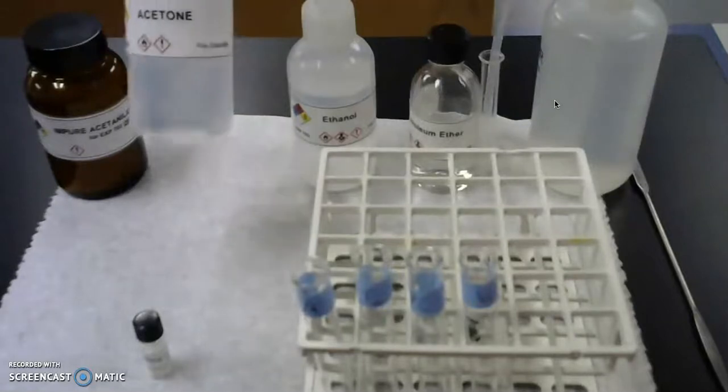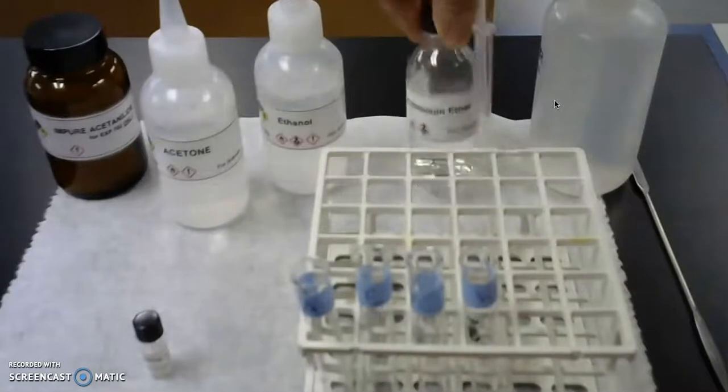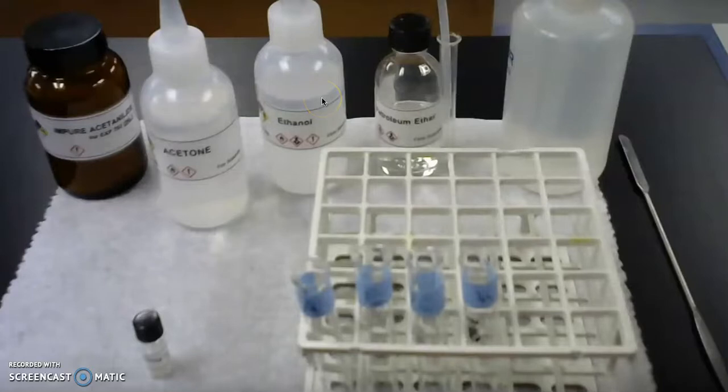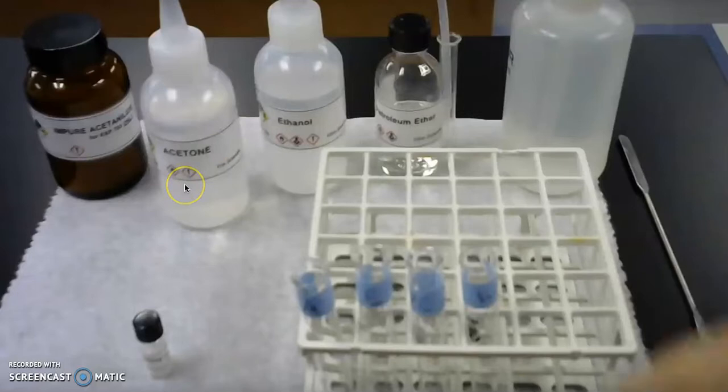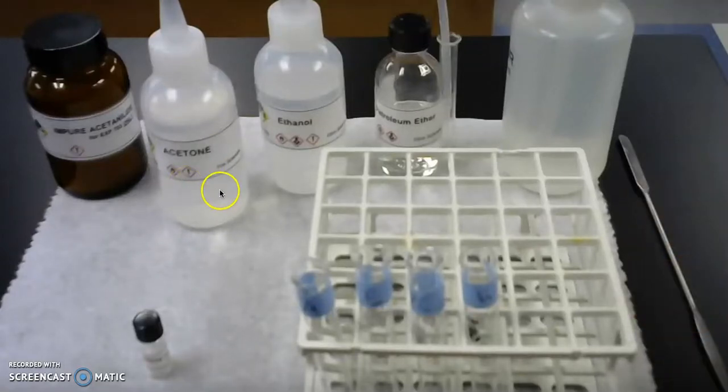We will start off by adding approximately one milliliter to each of the four test tubes. We'll measure the first one with a graduated cylinder and then we will add the rest based on an estimate off of the first tube.